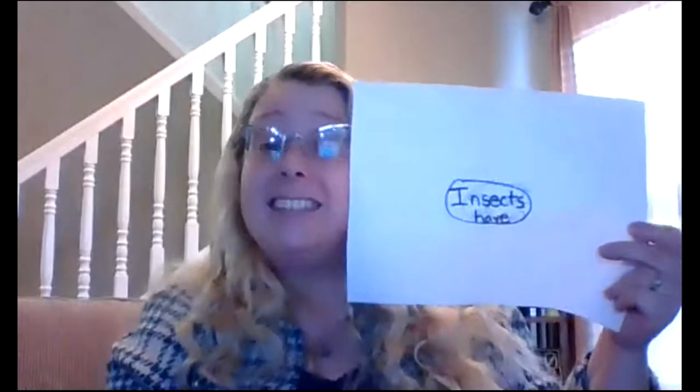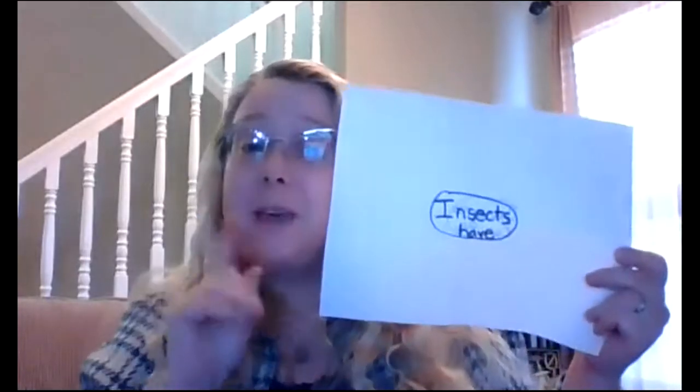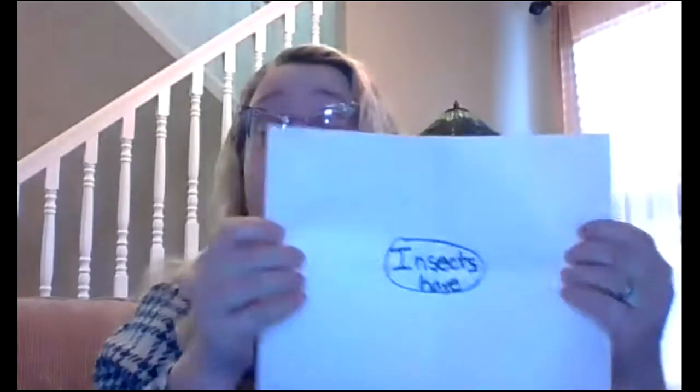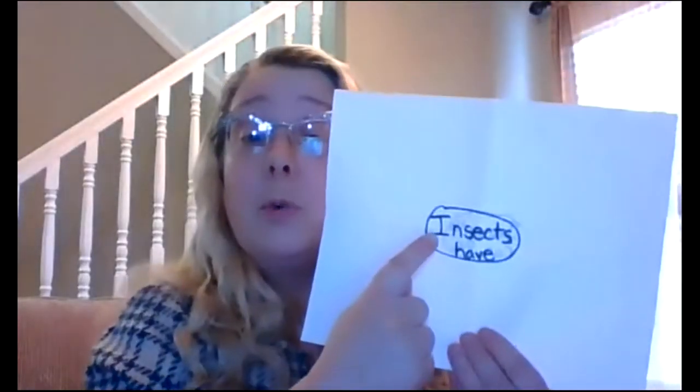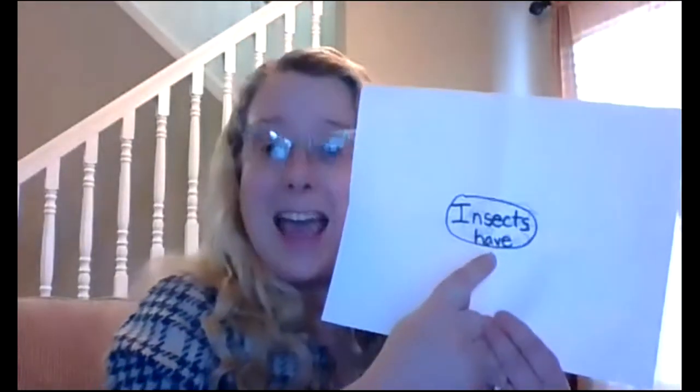Let's make a text details chart. To make your text details chart, you want to fold your paper in half and then fold your paper in half again. It makes it so that you have four different areas to write in. Then in the center of your paper, I want you to write the words insects have.